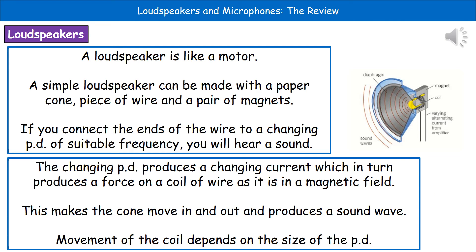The second device we can look at are loudspeakers. Loudspeakers behave rather like a motor. We could generate a simple loudspeaker just by having a paper cone, a piece of wire, and a pair of magnets. If you connect the ends of the wire to a changing potential difference of suitable frequency, you'll be able to hear a sound. Remember that if the frequency is either too high or too low we won't hear it, because humans only have a limited range of hearing, and as you get older that range gets narrower.